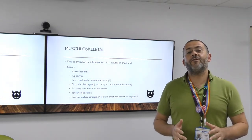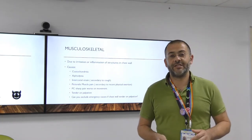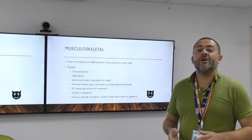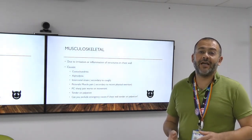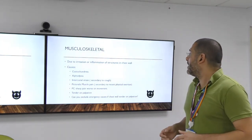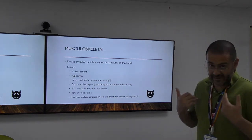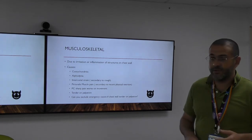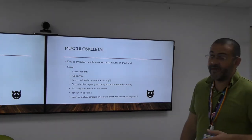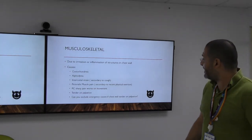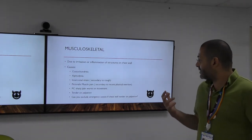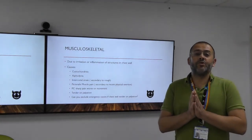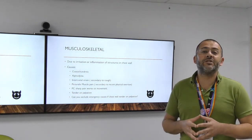Another group of causes is musculoskeletal chest pain, which is often the diagnosis, but we should always look for the more serious causes first rather than settling for an easy way out. This occurs due to irritation or inflammation of chest wall structures — costochondritis or Tietze's syndrome, intercostal strain secondary to cough, or pectoralis muscle pain secondary to heavy lifting or physical exertion. Patients usually present with sharp chest pain worsened by movement and are tender on palpation, but do not exclude other causes just because the patient is tender on palpation.